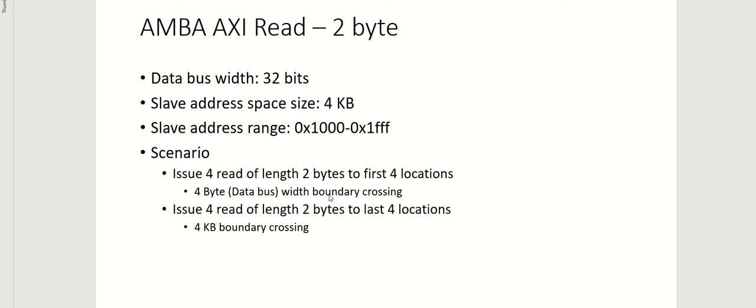In this particular scenario, the last read is going to cross the data bus width boundary, and we will look at how that affects the reads issued on the AXI channels. The second group is issuing four reads of length two bytes to the last four locations of this address range. In that case, the last read will cross both the data bus width boundary and the 4KB boundary, and we will look at how that affects the transactions on the AXI channel.